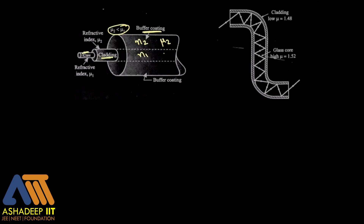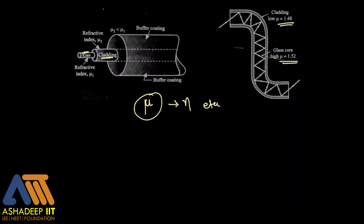Mu2 is less than mu1. So the cladding is of mu2 (or n2) and the core is n1 (or mu1). The refractive index is denoted as mu in many books, as n in our textbook, and sometimes as eta. These reference values are given just for reference — you don't need to memorize them.